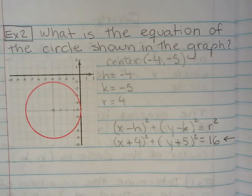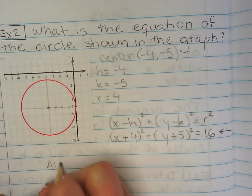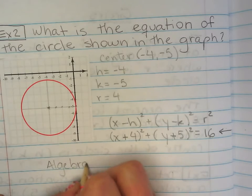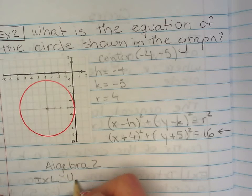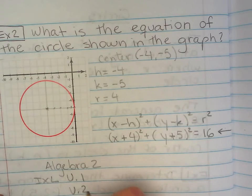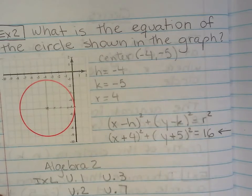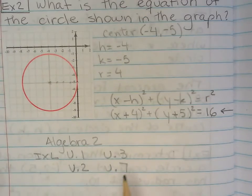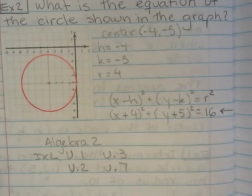Now, the assignment will be, in Algebra 2, iExcel, will be U1, U2, U3, U7. All of them from Algebra 2. That's a U, not a V. You're going to feel smart after you do that.